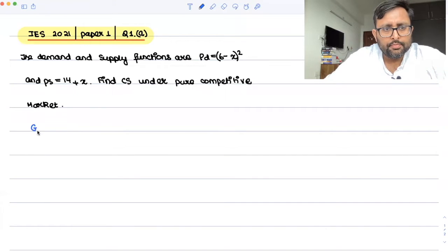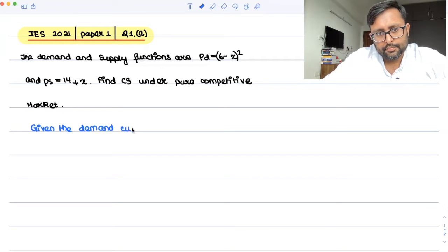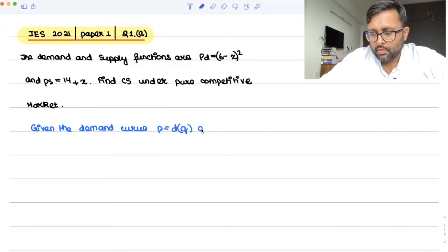Given the demand curve p equals dq and supply curve p equals sq, right? When you find out the equilibrium point where demand equals supply, the equilibrium point...